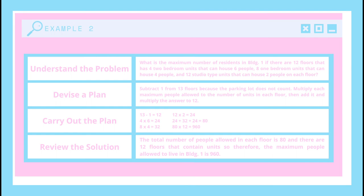80 times 12 equals 960. So I will review the solution: the total number of people allowed on each floor is 80, and there are 12 floors that contain units. Therefore, the maximum number of people allowed to live in Building 1 is 960.